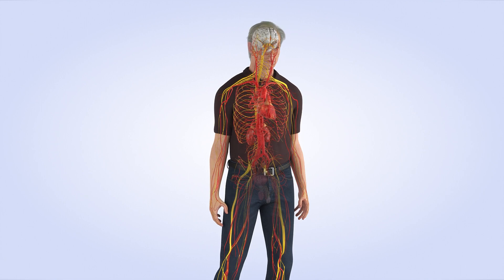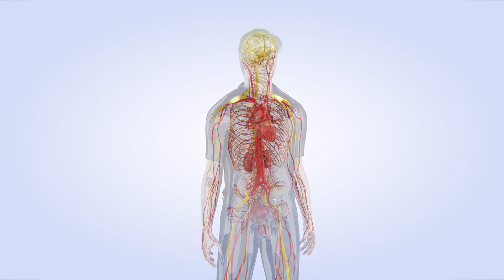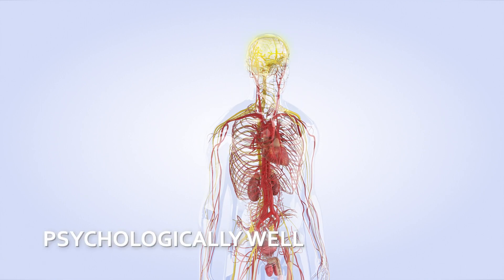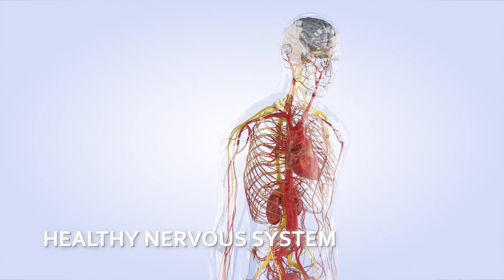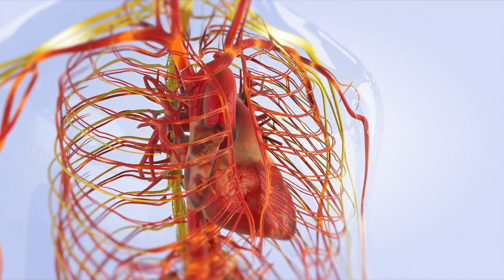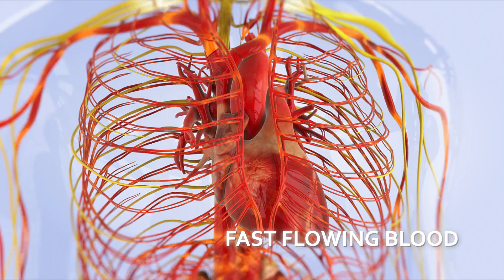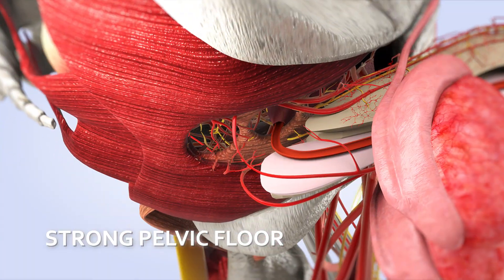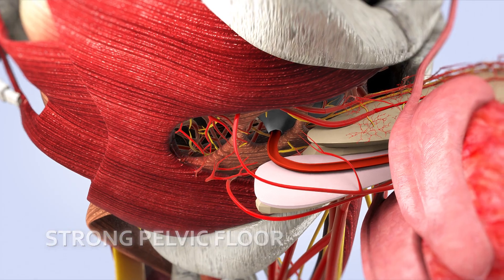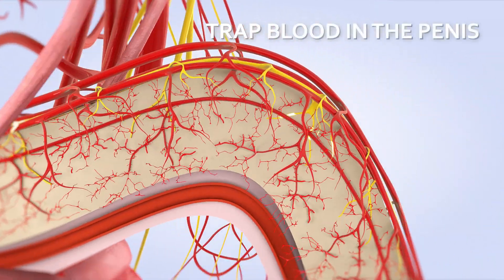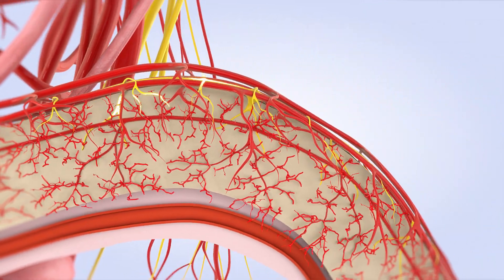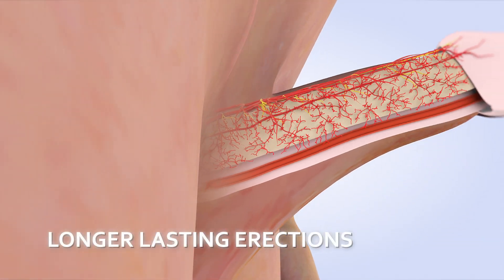In order to achieve and maintain an erection, a man needs to be psychologically well and stress-free, have a healthy and energized nervous system, generate powerful and fast-flowing blood, supported with strong and active pelvic floor muscles. These four factors enable blood to rush and remain trapped in the penis, which rapidly expands into an erect, solid and long-lasting erection.